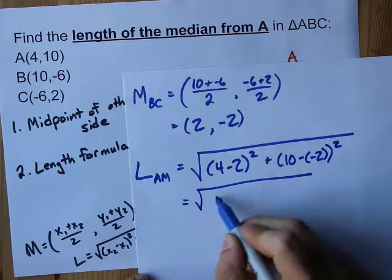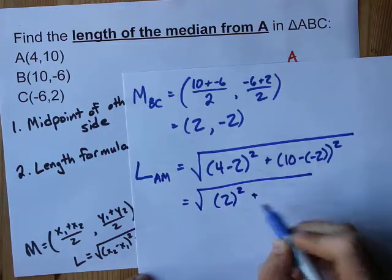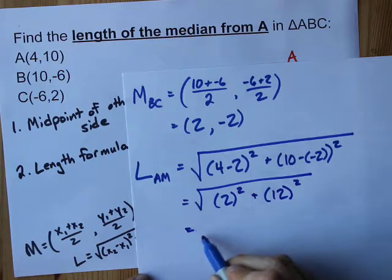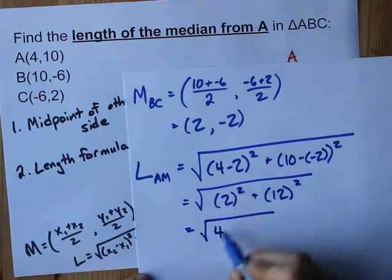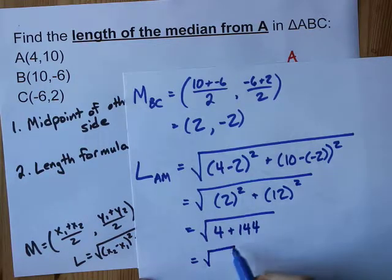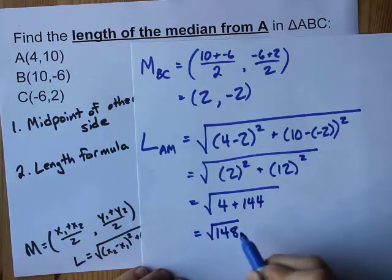Let's see. 4 minus 2 is 2. 10 minus negative 2 is 12. That gives me 2 squared, which is 4, and 12 squared, which is 144. I get the square root of 148.